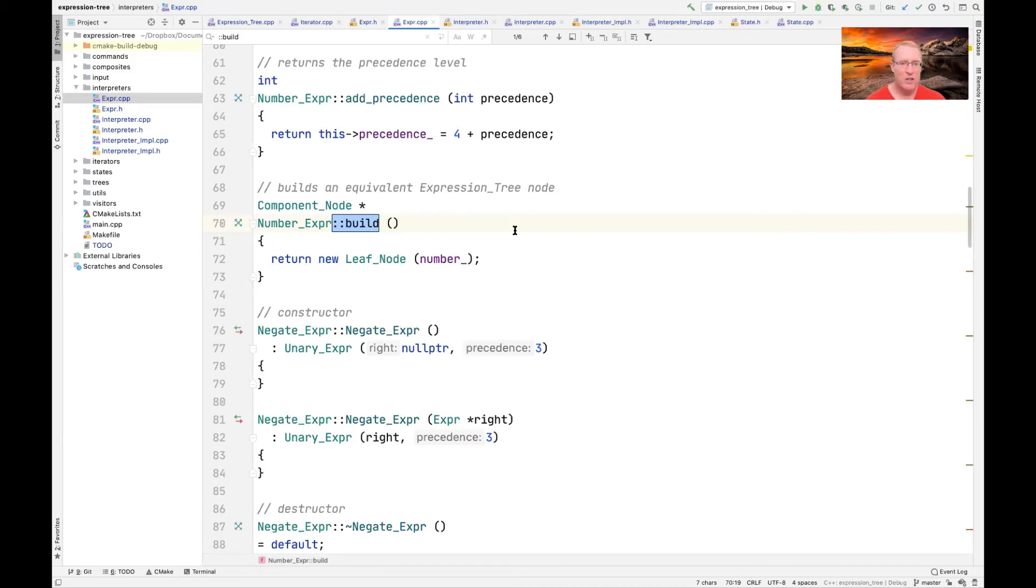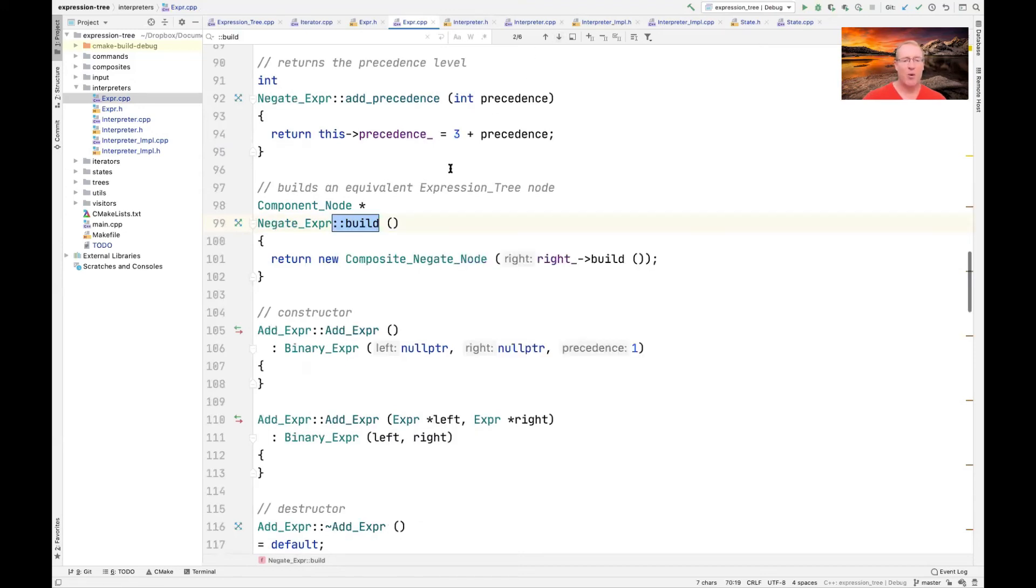They all return the corresponding object that is related to what the parse tree class does. So if we have number expert, when we call the build method, it returns the leaf node here.